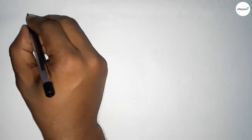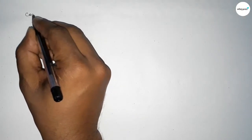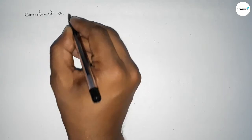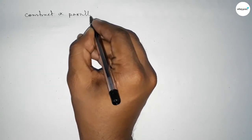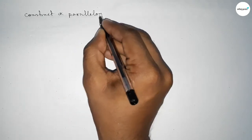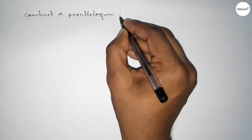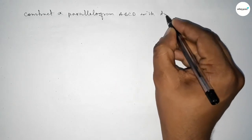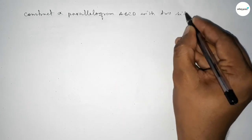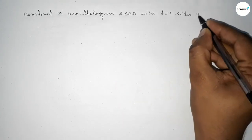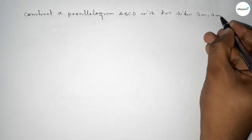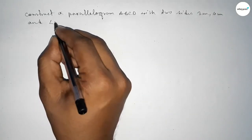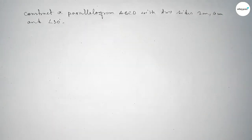Hi everyone, welcome to SA Share Classes. Today in this video we have to construct a parallelogram ABCD with two given sides: 3 centimeters and 4 centimeters, and the angle between these two lines is 30 degrees.